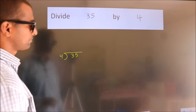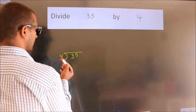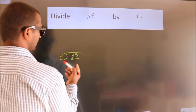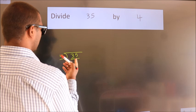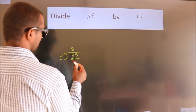Next, here we have 3, here 4. 3 is smaller than 4, so we should take two numbers: 35. A number close to 35 in the 4 times table is 4 times 8 equals 32.